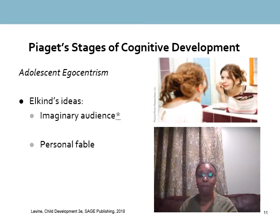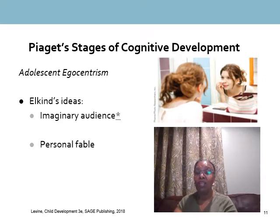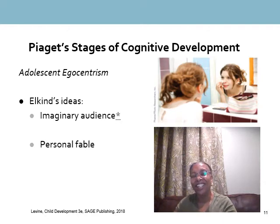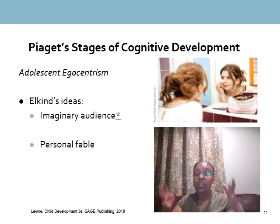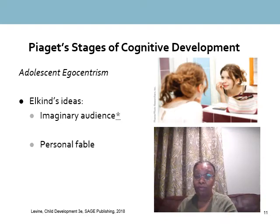Personal fables involve teens constructing a unique narrative or identity for themselves. For example, a teenager might change their name to something they find more appealing, develop a whole new character for themselves, and say 'this is who I am and this is what I believe in.' Fables are essentially storytelling — they tell a different story about themselves.